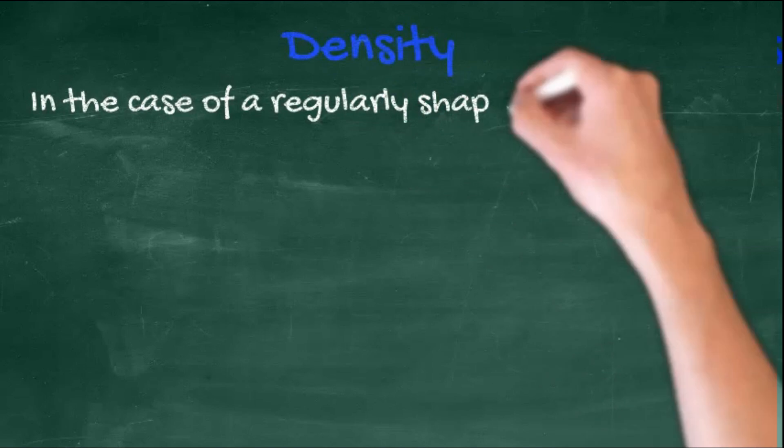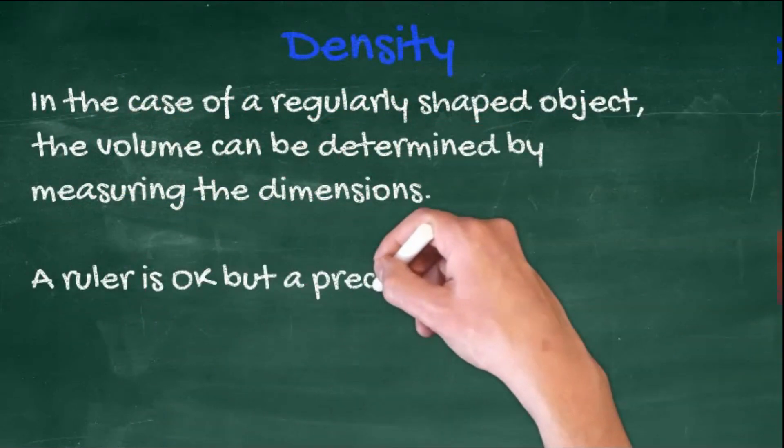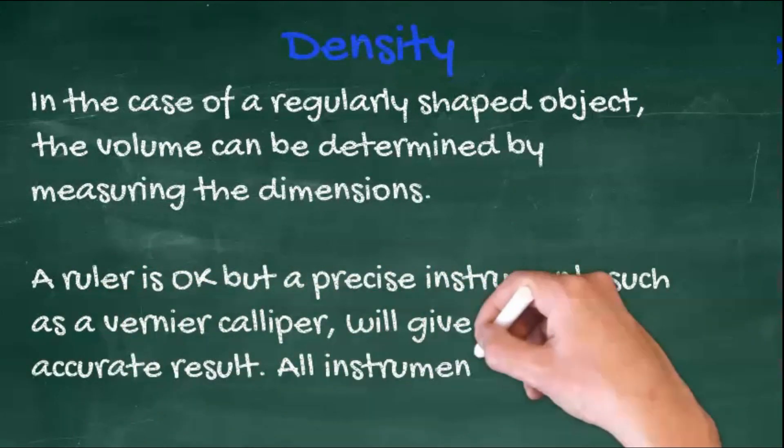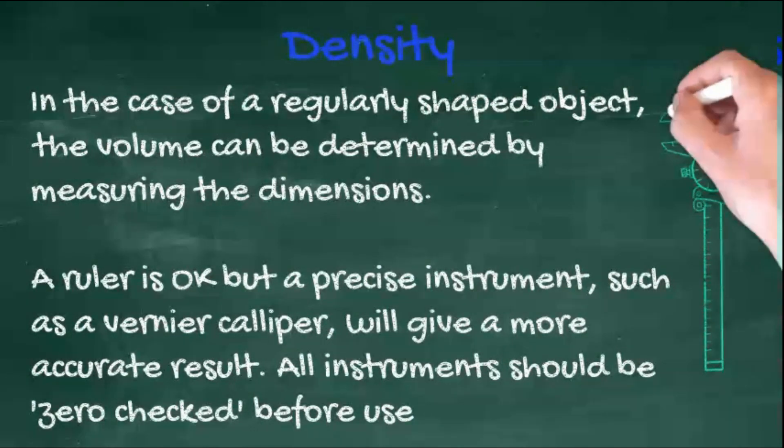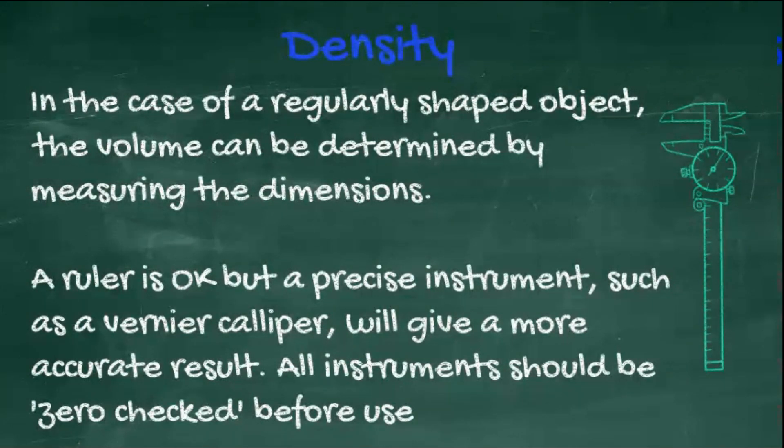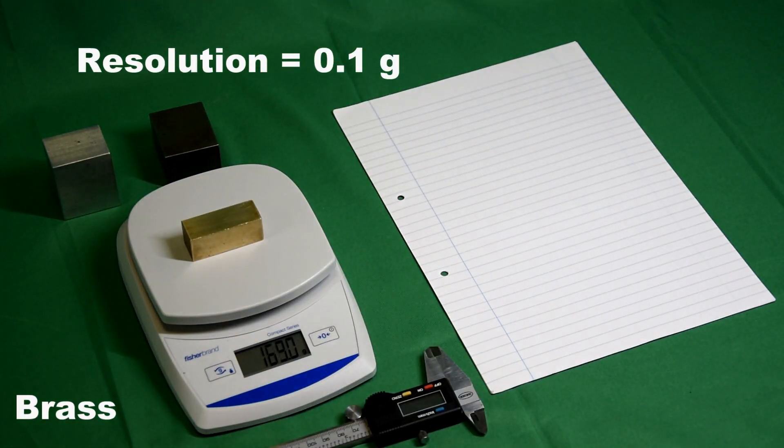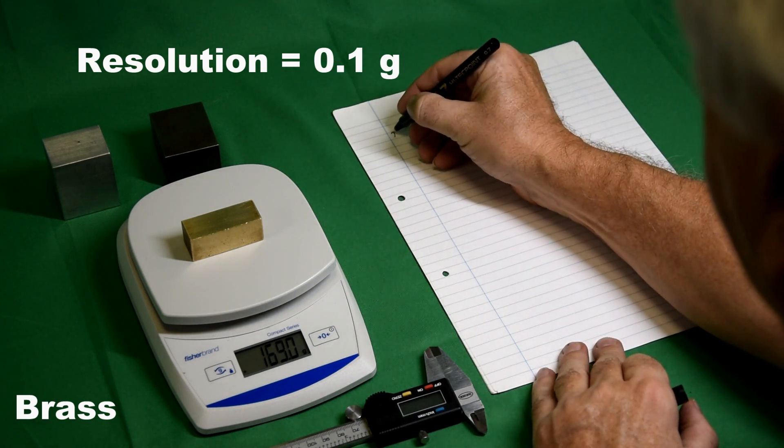In the case of regularly shaped objects, the volume can be determined by measuring the dimensions: height, width, and depth. A ruler is okay for this, but a more precise instrument such as a vernier caliper will give a more accurate result. All digital instruments should be zero-checked before use, and this balance has a resolution of 0.1 grams.